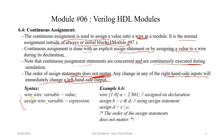Any change in any right-hand side input will immediately change the left-hand side output — assign statements execute as soon as there is a change in the right-side expression. There are two ways to do continuous assignment: assigning a value to a wire during its declaration, or using the explicit 'assign' keyword. For example: wire A = `b01; or assign B = expression. The order of these assignments doesn't matter, and execution is triggered by any change in C, B, X, or Y.